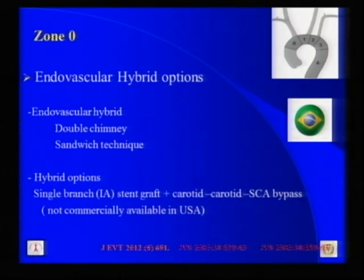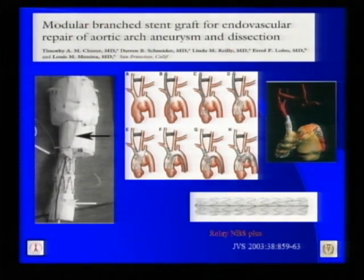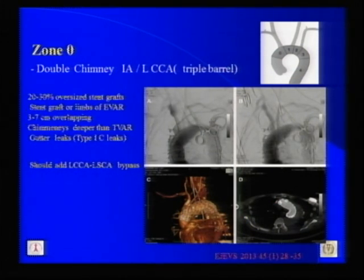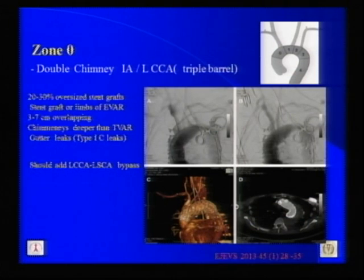Regarding endovascular hybrid options for Zone 0, the double chimney or sandwich technique was presented by Dr. Lobato, and hybrid options were published by Dr. Tùdor back in 2003, featuring a single-branch innominate artery stent graft with subsequent bypassing — none of these are commercially available. The double chimney technique for Zone 0, published recently in the European Journal of Vascular Surgery, involves retrograde delivery of innominate artery and left common carotid artery stents into the ascending aorta, slightly deeper than the TEVAR component, overlapping approximately 3–7 cm and oversizing the stent graft up to 30%. This creates gutter leaks — labeled Type 1C leaks — as with any sandwich or periscope technique. Adding a common carotid to left subclavian bypass is recommended to reduce strokes and spinal cord injury.